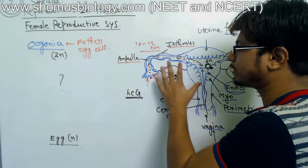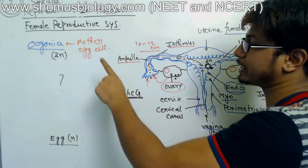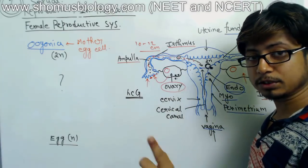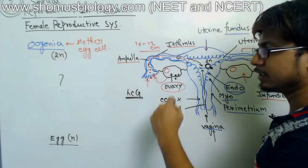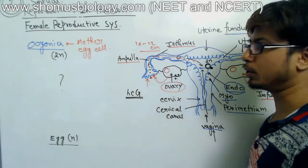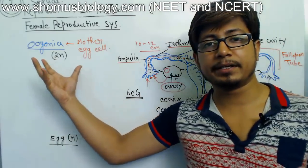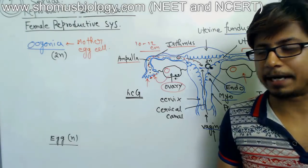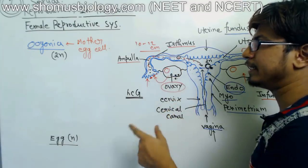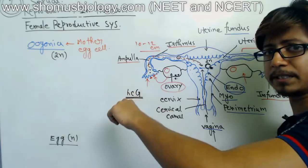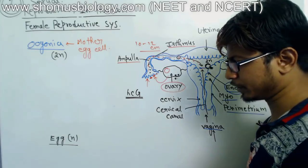Inside the ovary, all processes take place. Inside the ovary there is a mother egg cell known as oogonium, with 2n number of chromosomes — a diploid cell. This oogonium is present before the birth of the child, even in the fetus. In the fetal ovary you will find oogonium, and this oogonium starts mitosis division to produce many versions of itself.